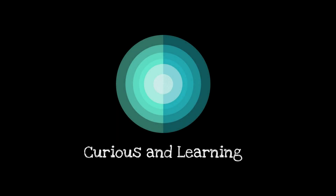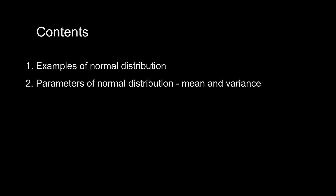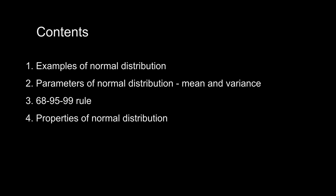Hello everyone and welcome to Curious and Learning. This video is about normal or Gaussian distribution. The purpose of this video is to familiarize you with the terminology used around normal distribution. We'll learn about examples, parameters like mean and variance, the 68-95-99 rule, properties of normal distribution, and finally standard normal curve and z-scores.